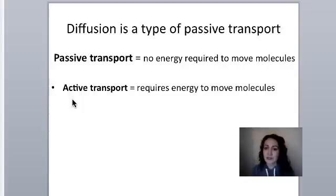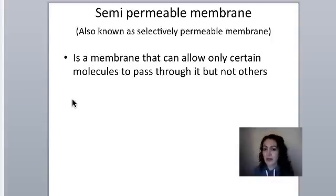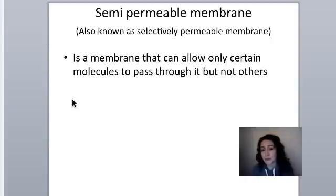Before getting into other types of diffusion, let's talk about what a semipermeable membrane is. A semipermeable membrane is also known as a selectively permeable membrane — you'll hear both terms in biology. It's a membrane that can allow only certain molecules to pass through, not all molecules. It's semipermeable because it only lets some molecules through.